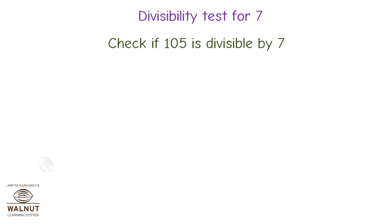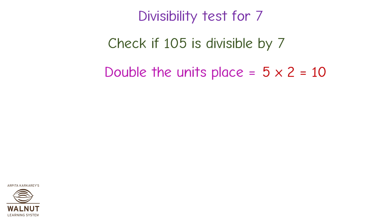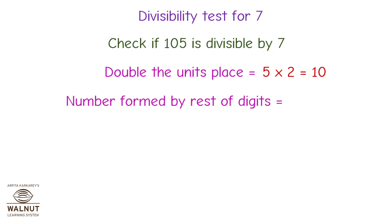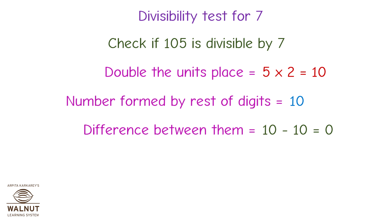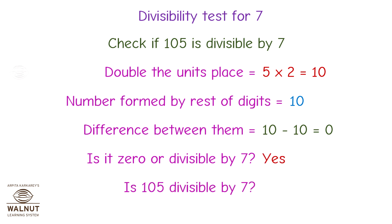Divisibility test for 7. Check if 105 is divisible by 7. Double the units place: 5 multiplied by 2 is equal to 10. Number formed by the rest of the digits is equal to 10. Difference between them is equal to 10 minus 10, which is equal to 0. Is it 0 or divisible by 7? Yes! Therefore, is 105 divisible by 7? Yes!